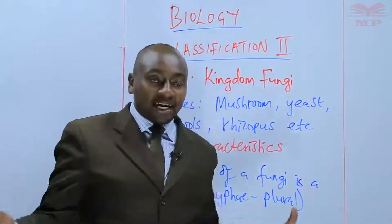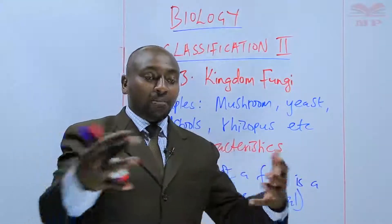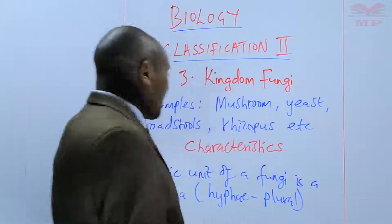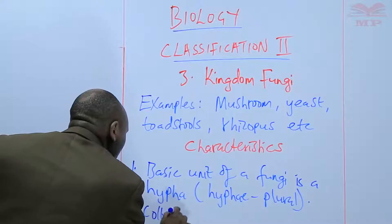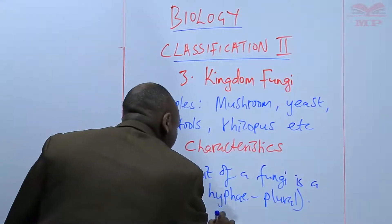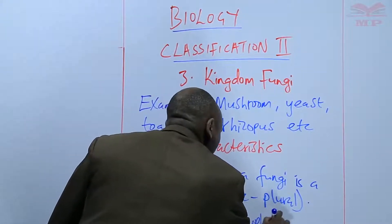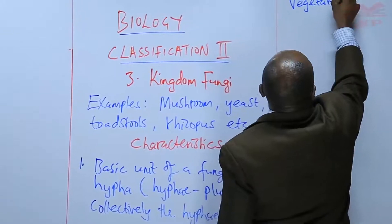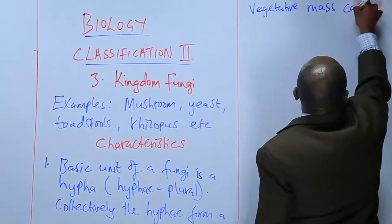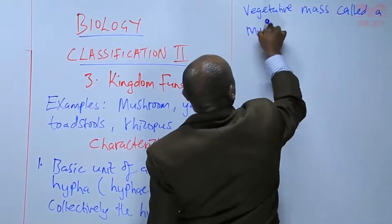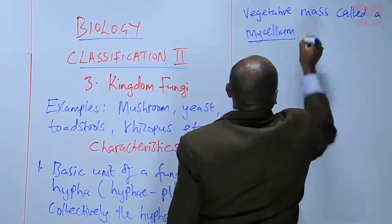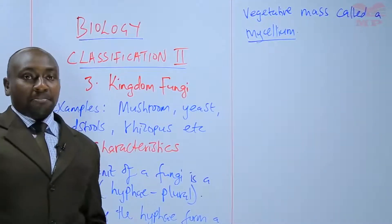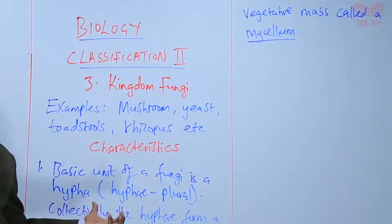When those hyphae are collectively merged together, they form a vegetative body known as a mycelium. So collectively, the hyphae form a vegetative mass called a mycelium. We are going to have a diagram of a mycelium consisting of several hyphae.